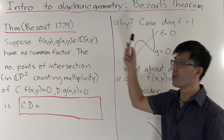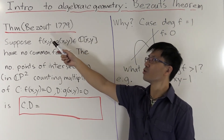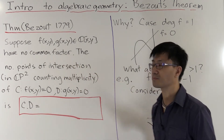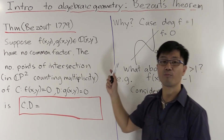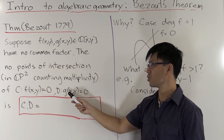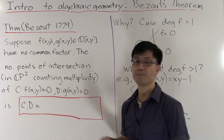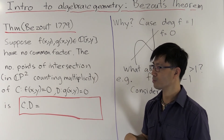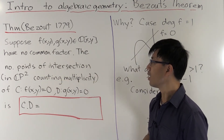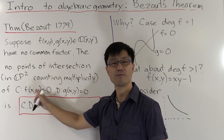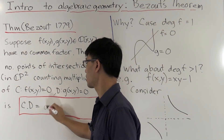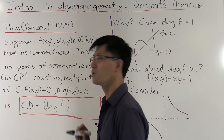Now we come to the statement of Bezout's theorem. We look at two polynomials in X and Y, F and G, and assume they have no common factor. We want to count the points of intersection of curve C, defined by f(x,y)=0, and curve D, defined by g(x,y)=0, denoted C·D. We count these inside the projective plane and with multiplicity. There's a very nice formula — it depends only on the degrees of F and G.